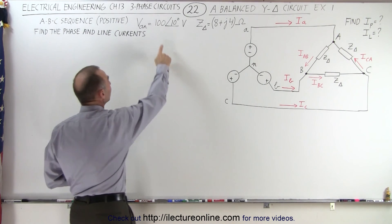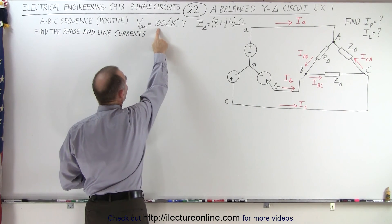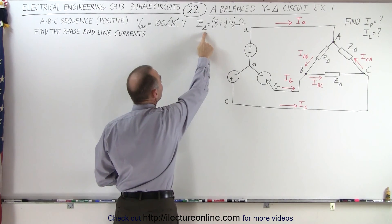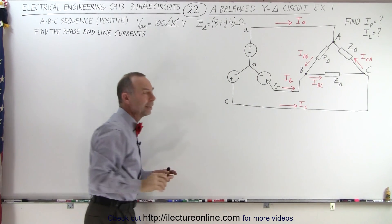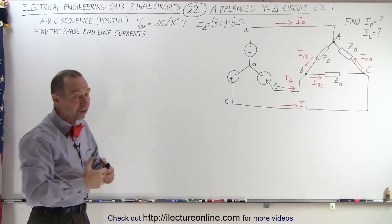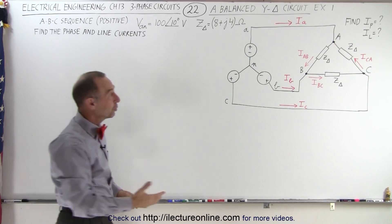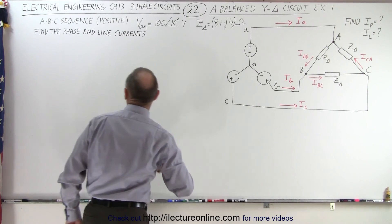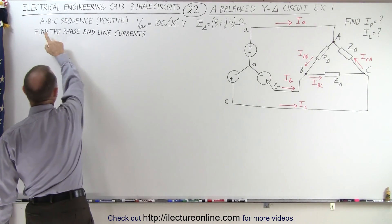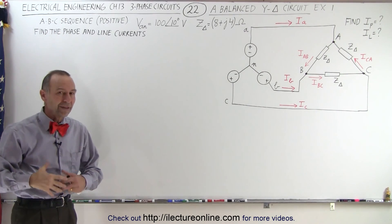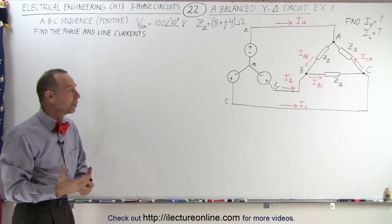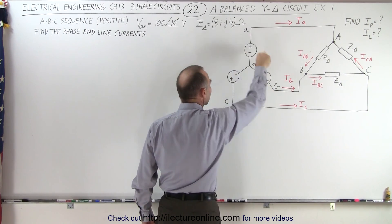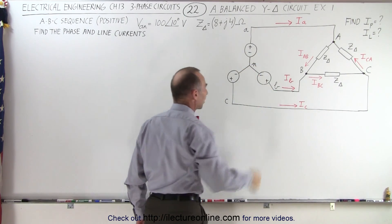Notice we're given the phase voltage V sub AN at 100 volts with a phase angle of 10 degrees, and we're given the impedance at 8 plus j4 ohms. Since it's a balanced load, all three impedances have the exact same value. We're also told that we have an ABC sequence, which means we have a positive sequence, so the voltage source goes from A to B to C back to A in a clockwise direction.